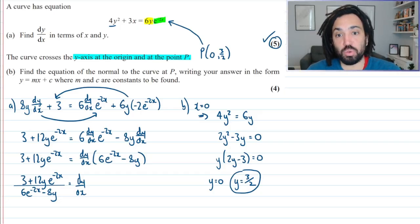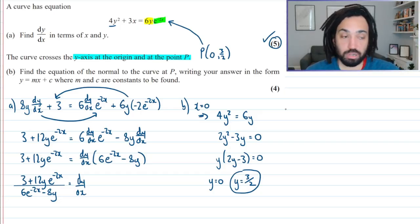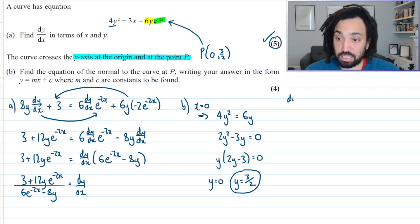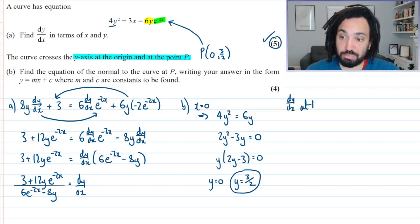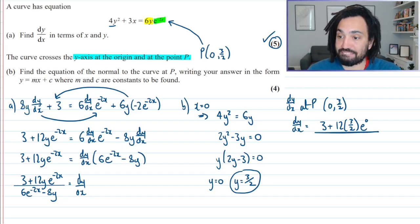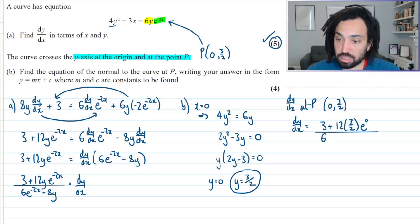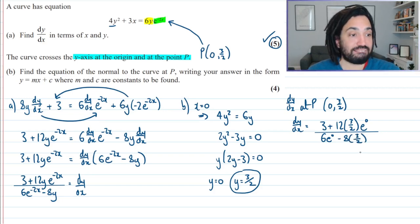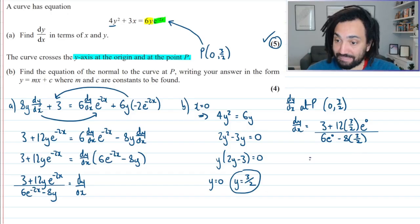And now it says find the equation of the normal to the curve at P. Right, well, what I'm going to need to do is I'm going to need to find dy by dx. So dy by dx at P means that we have an x-coordinate of 0 and a y-coordinate of 3 over 2. So dy by dx, well, we have it down here, don't we? So it's going to be 3 lots of 12 times 3 over 2 and then e to the 0 all over 6e to the 0 minus 8 lots of 3 over 2.